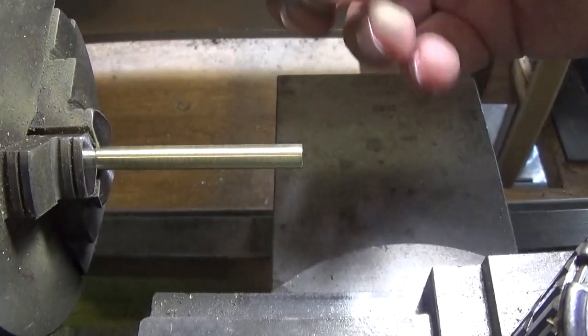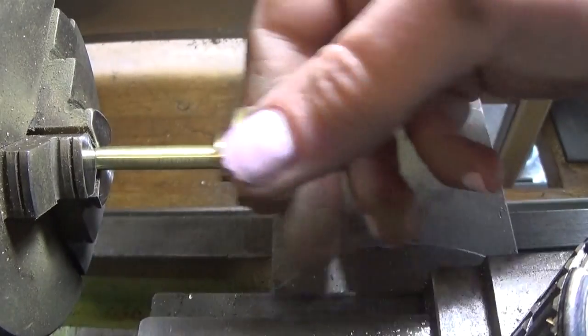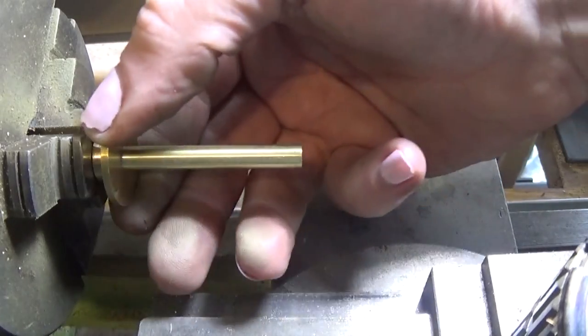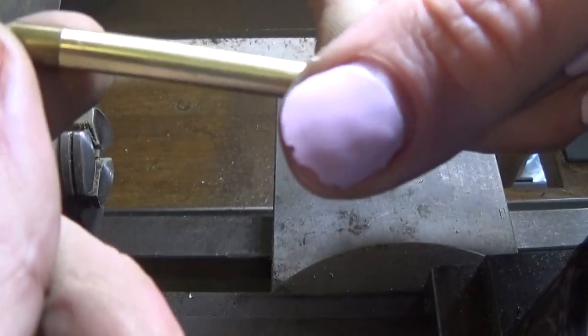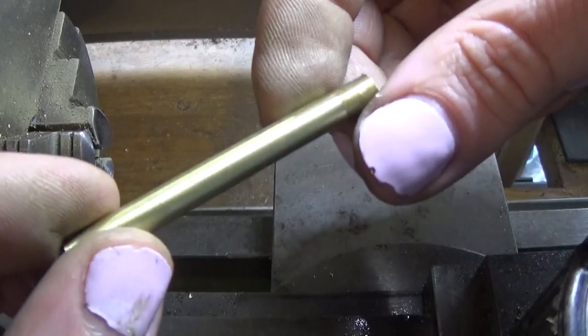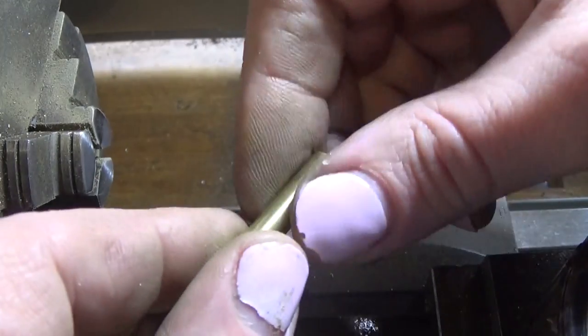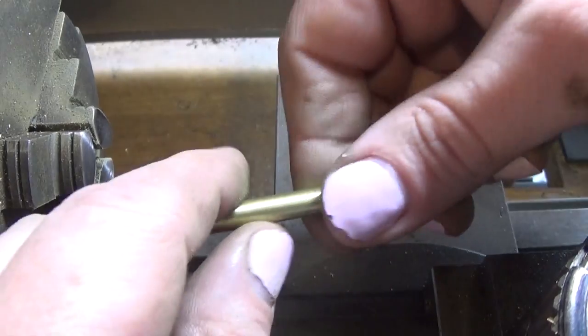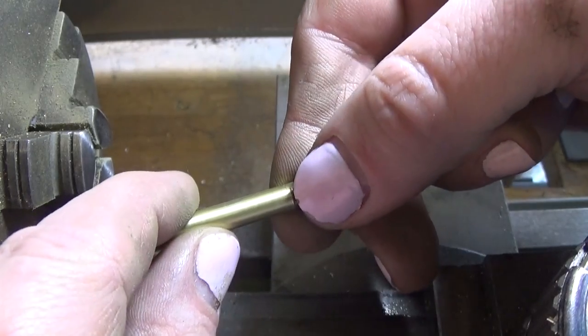So the secret is to keep that moving. Otherwise you'll get low and high spots there and it won't be parallel. But that's pretty good there, so I'm going to live with that. I put a mark on that, so I'm just going to turn that round. Put a tiny bit of wet dry around there just to stop it being marked and face that down to that line.